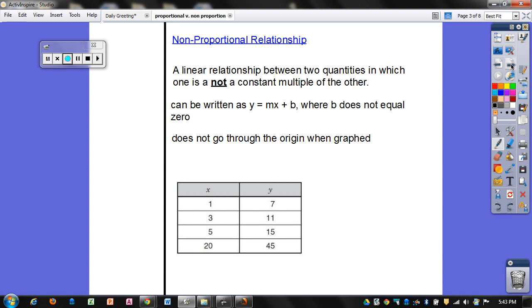A non-proportional relationship between two quantities in which one is not a constant multiple of the other. So this is where you have it written in slope-intercept form, but B cannot be equal to 0. If your B is 0, that means you would have a proportional relationship. But if you have B as any other number, positive or negative, then you would have a non-proportional relationship.